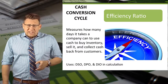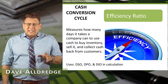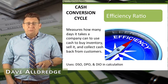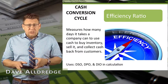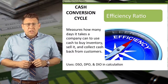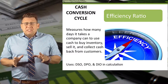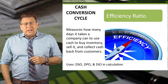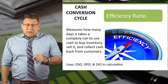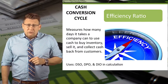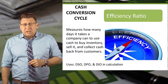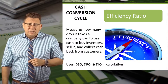The cash conversion cycle is basically how long it takes a company to go from cash to even more cash, hopefully. It uses information already calculated with the inventory turnover ratio, the days sales and receivable, and the days payable outstanding.